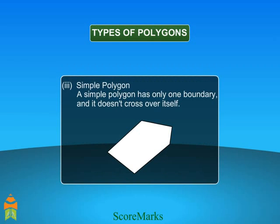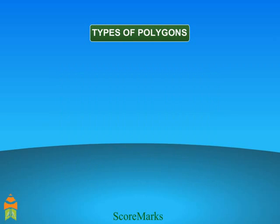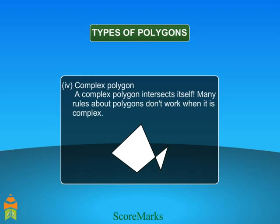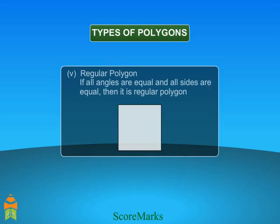Simple Polygon: polygons which are made up of only line segments. Complex Polygon: a complex polygon intersects itself.